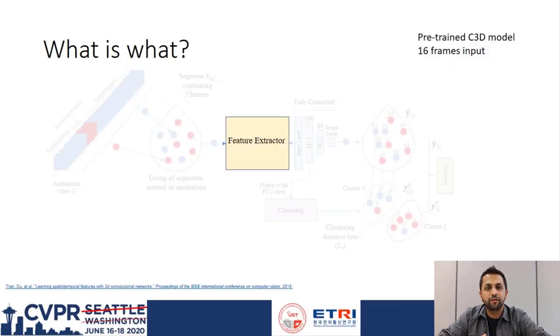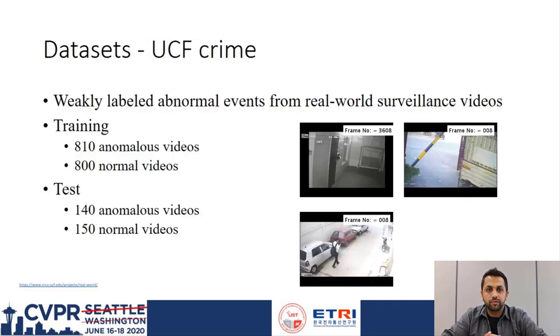As a feature extractor, we employ a popular framework for videos called Convolution 3D, or C3D. It takes 16 frames as input; therefore, we fix the size of our segments as 16.